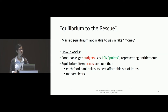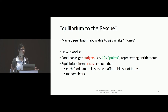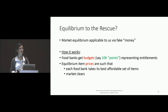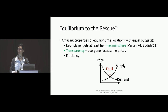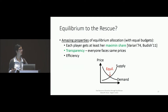Here's how it works: a food bank gets a budget — say 10K points — representing their entitlement. There are equilibrium item prices, and each food bank takes their budget, looks at all the priced food items, and picks the best affordable set of items. The market clears so no food is wasted. It turns out this concept from economics has amazing fairness properties: each player is guaranteed to get at least their maximin share. It also has built-in transparency because everybody comes to the market, faces the same prices, and can just pick what they want — a very level playing field.